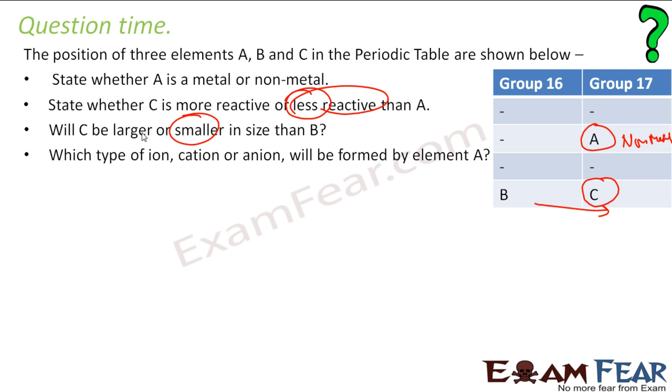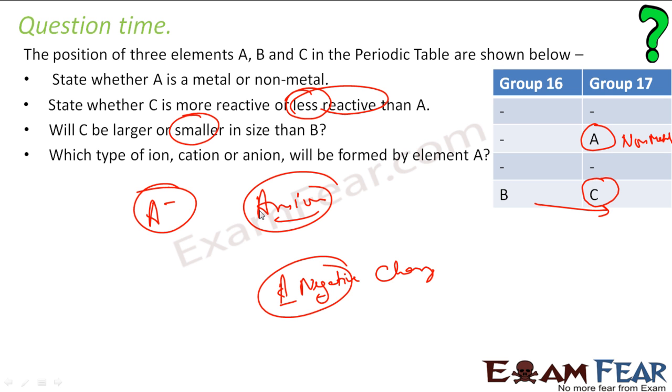What type of ions, cations or anions, will be formed by A? Since A is a non-metal, A will accept electrons and A will become A minus. And A minus is nothing but anion. Because I told that anion is a negative charge. A negative is anion. So A negative is anion. So this is a non-metal because in group 17, C is less reactive because as you go down the atom size increases and the power of C to attract electrons decreases. C is smaller than B because the shell is the same and if you compare to B, C has more power to attract electrons and the size will shrink. Since A is a non-metal, it will gain electrons, becomes A minus, and that is anion.